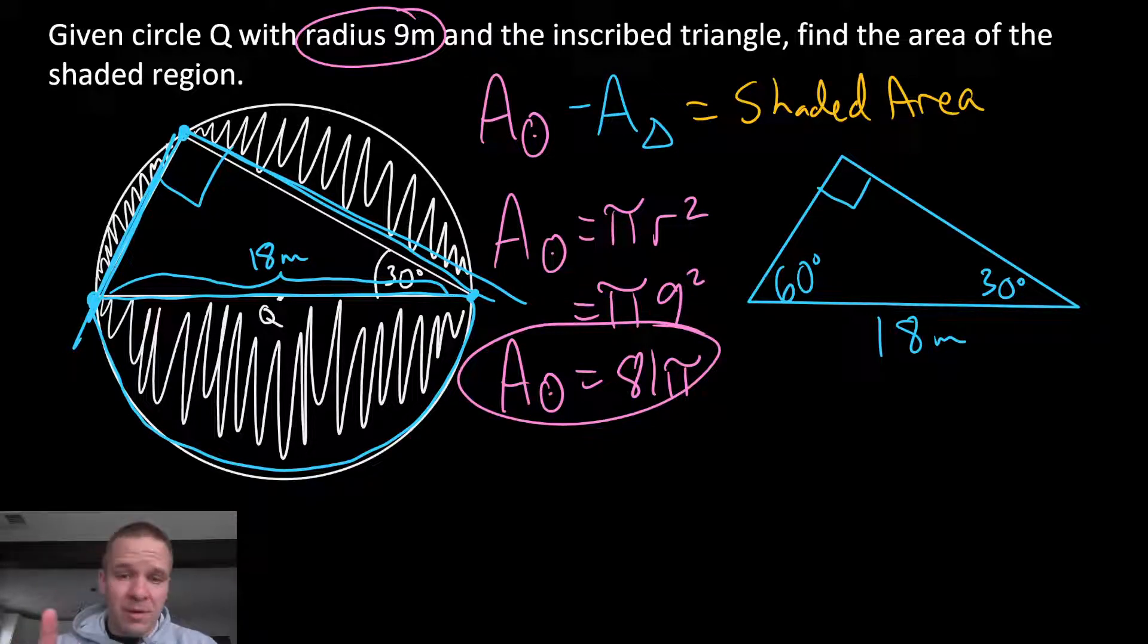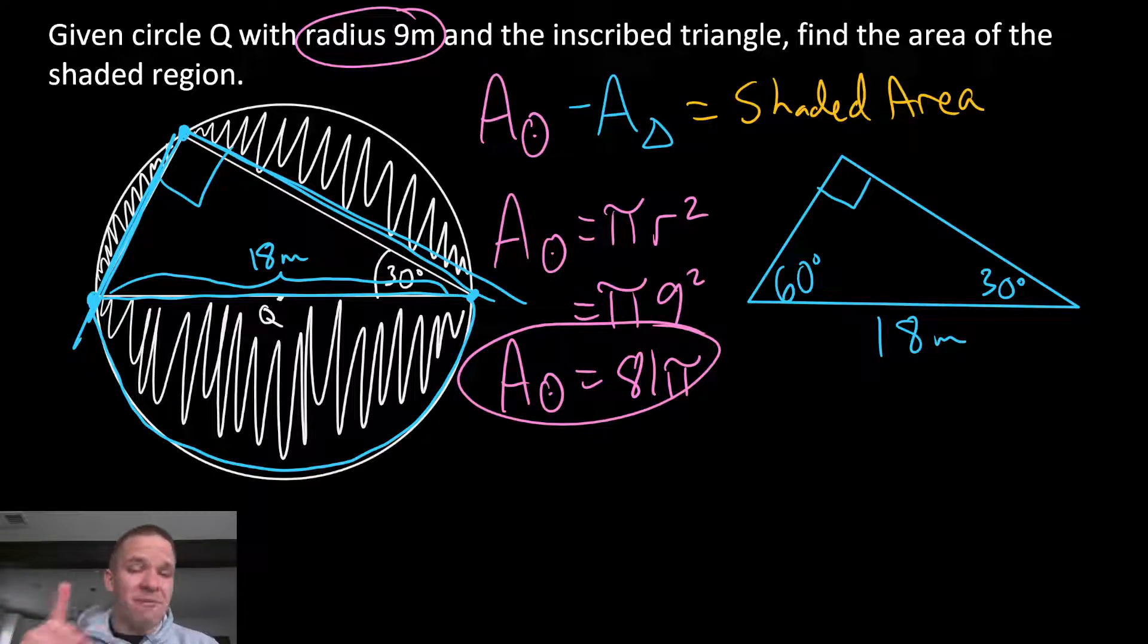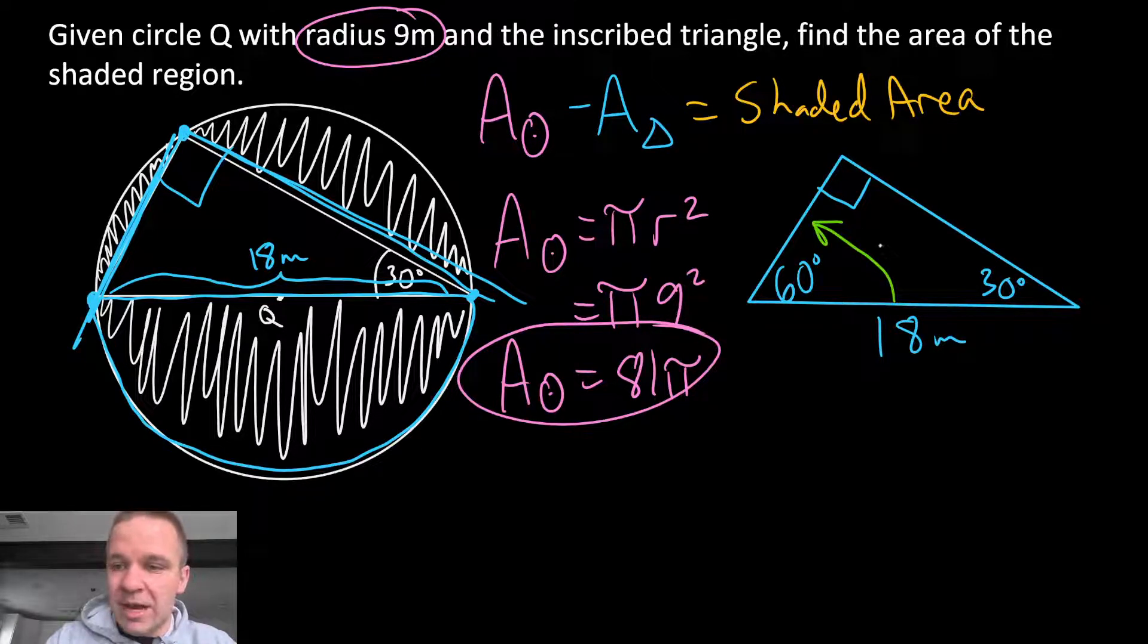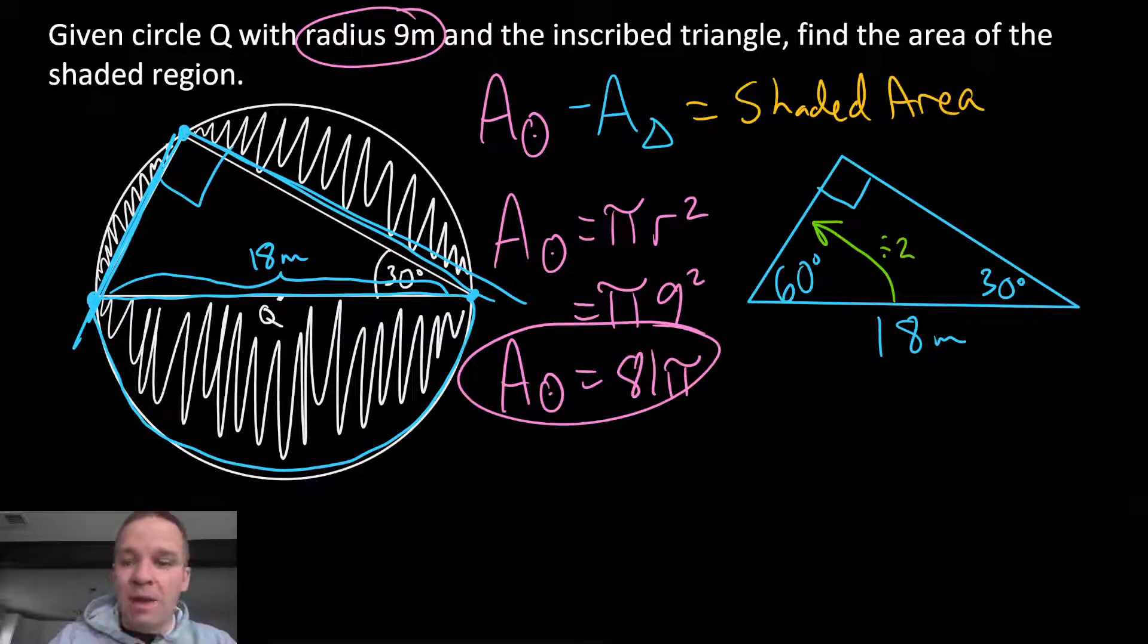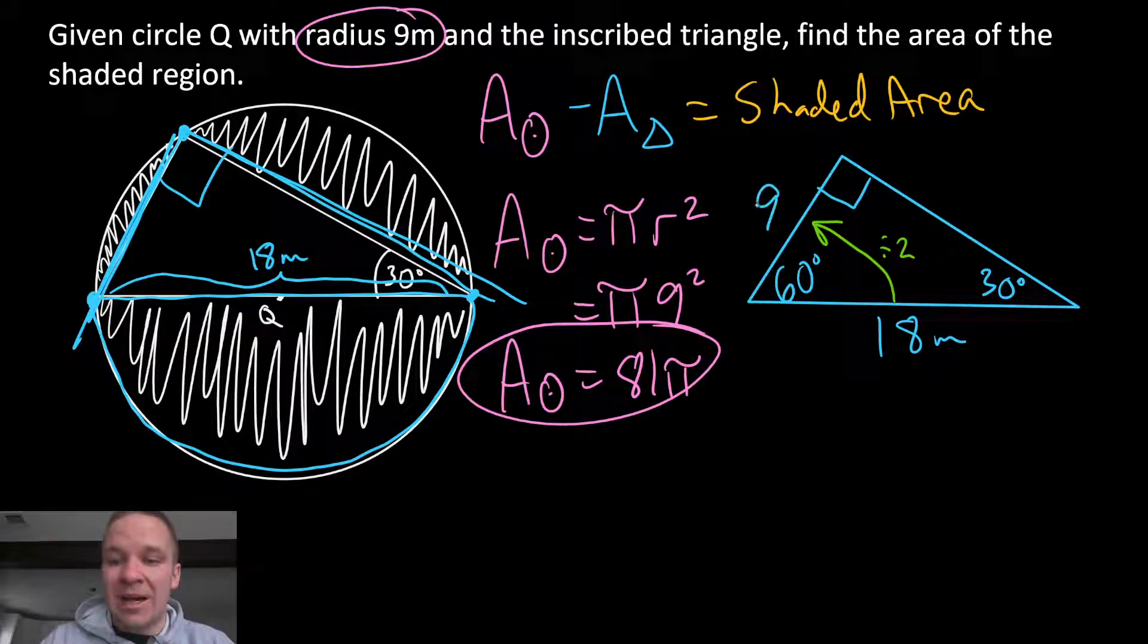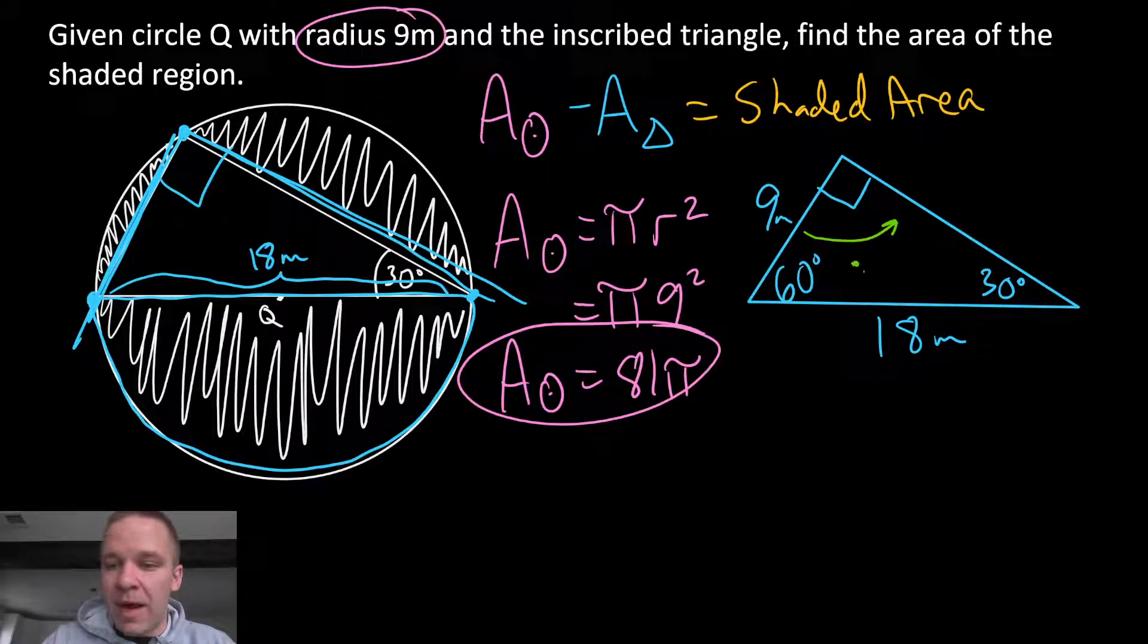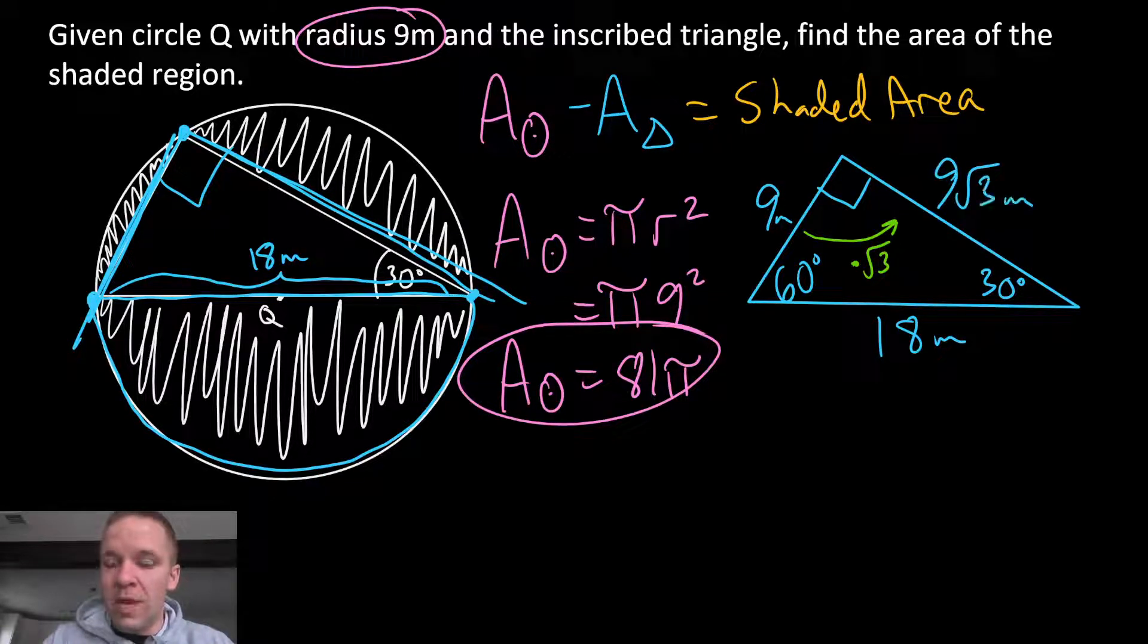Now, hopefully we do remember the area of a triangle formula is one half base times height, so I need a base and a height. Well, my base and my height, the only stipulation there is that they need to be perpendicular to each other. So perhaps I need to find those two missing sides of this triangle, because they are perpendicular to each other. I have my hypotenuse. How do I get from my hypotenuse to the short side? I'm gonna divide by 2. So to get that one, 18 divided by 2 is just 9 meters. And how do I get from that short side to my side that's across from the 60? I'm gonna multiply by root 3. So that means I'm just gonna have 9 root 3 meters.